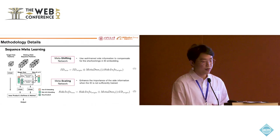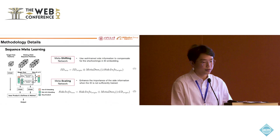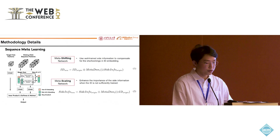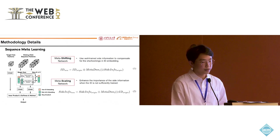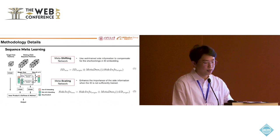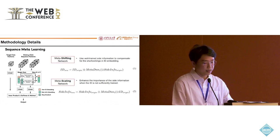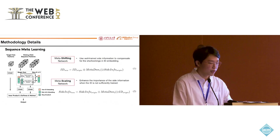More specifically, in the sequence meta-learning module, we deploy two meta-networks to address insufficiently trained item ID embeddings. The first is the meta-shift network or meta-DN1, as shown in equation one. It takes well-trained side information to compensate for shortcomings in the ID embedding training process. The second is the meta-scaling network or meta-DN2, as shown in equation two. It takes the original ID embedding as input, and if the ID embedding is not sufficiently trained, it enhances the importance of side information such as category and brand.